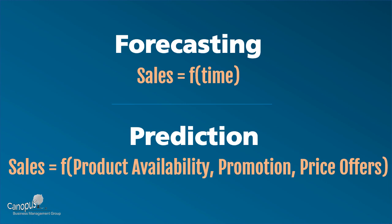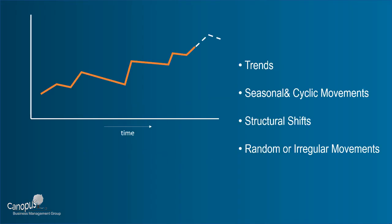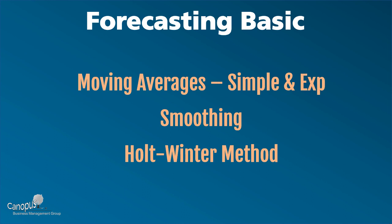Forecasts by default are impacted by, for example, trend in the data. They're impacted by seasonal or cyclical patterns that you find in the data. There can also be structural shifts where all of a sudden the data shifts from one range to another range, or it could also be impacted by random movements — data going all over the place.